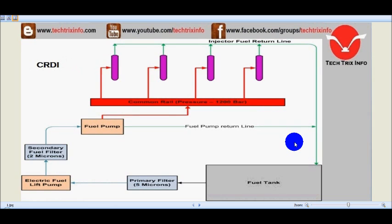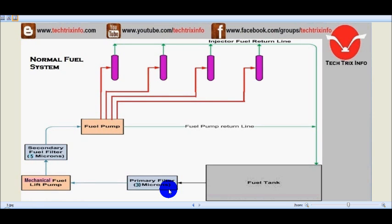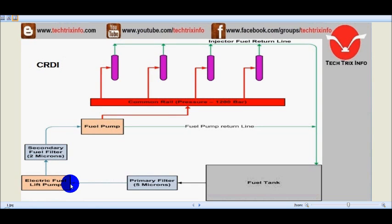But let's see a CRDI system. In a CRDI system, the primary filter is of 5 microns, compared to 30 microns in the normal fuel system. Also, instead of a mechanical fuel lift pump in the normal system, the CRDI system has an electric fuel lift pump.